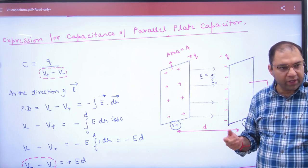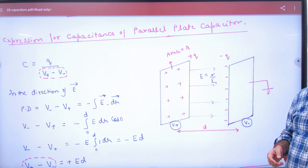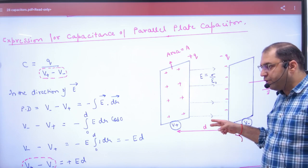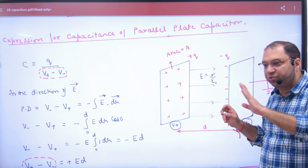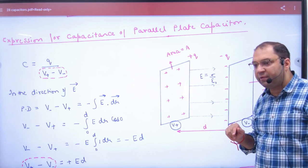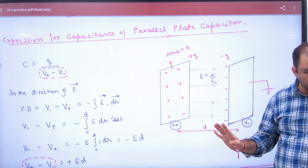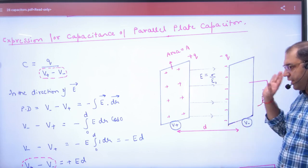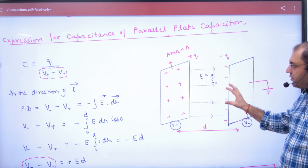Electric field is zero outside. And we discussed in flux that E's value between capacitor plates is constant. E is equal to sigma by epsilon_0. So this is E's value and it's constant.